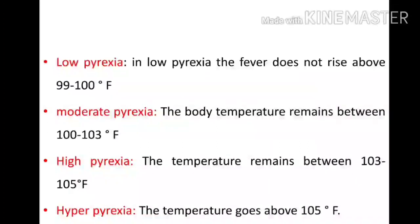Pyrexia can be classified into low pyrexia, moderate pyrexia, high pyrexia, and hyperpyrexia. In low pyrexia, the fever does not rise above 99 to 100 degrees Fahrenheit. In moderate pyrexia, the temperature is between 100 to 103 degrees Fahrenheit. In high pyrexia, the temperature is between 103 to 105 degrees Fahrenheit. In hyperpyrexia, the temperature is beyond 105 degrees Fahrenheit.